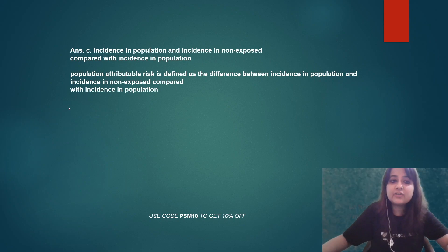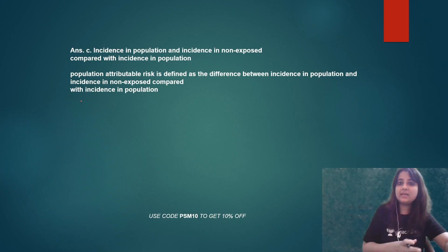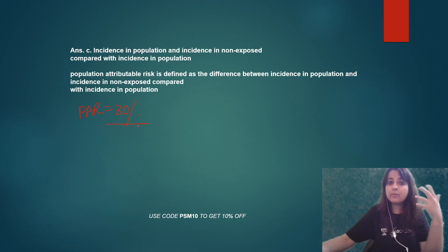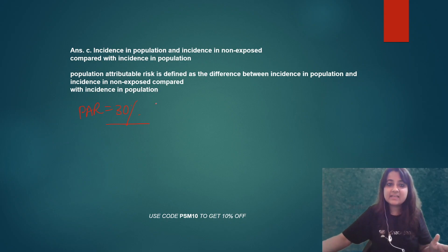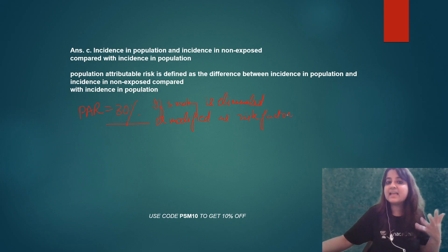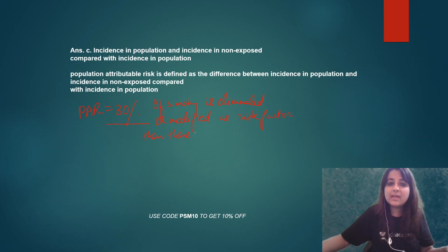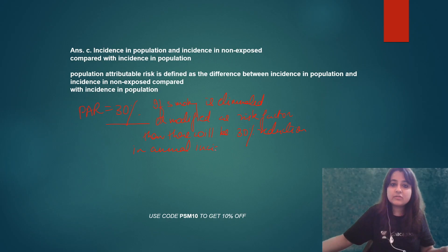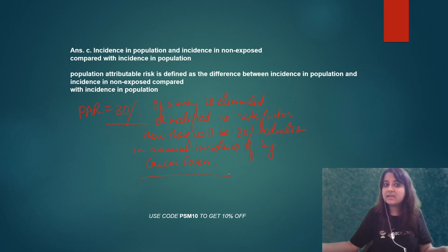Now, what is the interpretation? What does it mean? Suppose I was studying the association between smoking and lung cancer, and PAR comes out to be 30%. How will I interpret this? If smoking is eliminated or modified as a risk factor, then there will be a 30% reduction in the annual incidence of lung cancer cases.